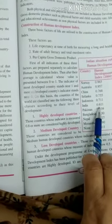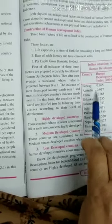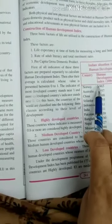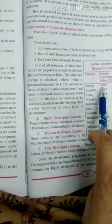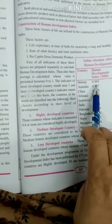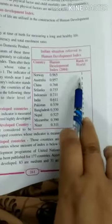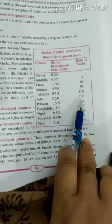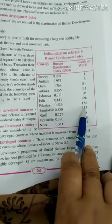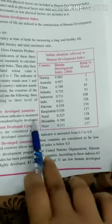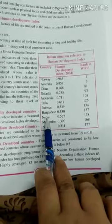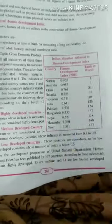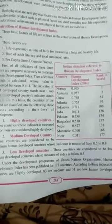Norway is number one with HDI of 0.9, और हम 126वें rank पर हैं. Pakistan 134वें, और Niger, Mozambique, Nepal also medium developed या less developed countries में आते हैं.